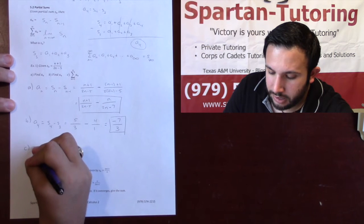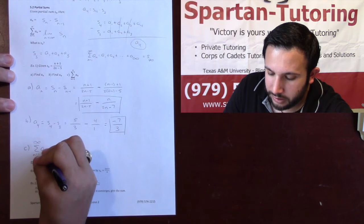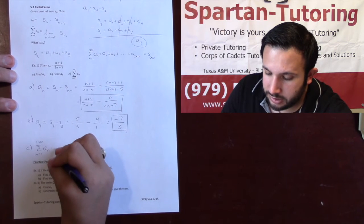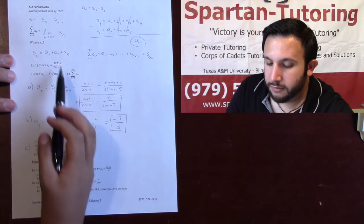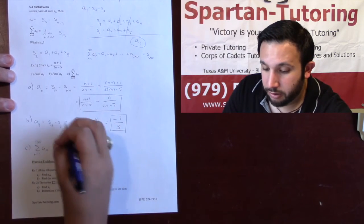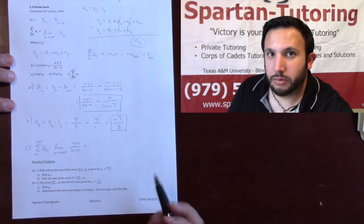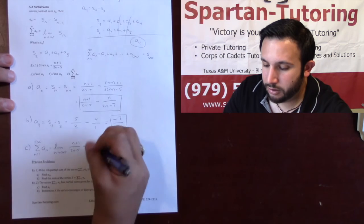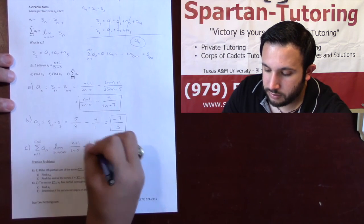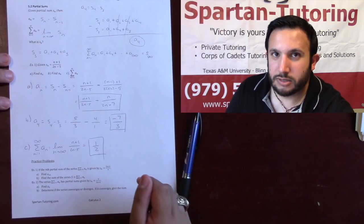Finally, for part C, if I want the infinite sum, the infinite sum from 1 to infinity of An, this is simply the limit as n approaches infinity of that Sn. Your Sn is n plus 1 over 2n minus 5. The limit's to infinity. Same power on top, same power on bottom. Take the coefficients. It's 1 half. That's how you deal with partial sums. Thank you.